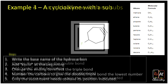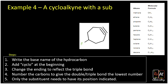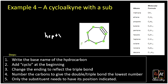Let's go to example four. Now we have a cycloalkyne with a substituent. We want to write the base name of the hydrocarbon by counting the carbons: one, two, three, four, five, six, seven — so that's a heptane. We want to change the ending — because it's a triple bond, we get heptyne. And because it's a cyclic compound, we put 'cyclo' up front, giving us cycloheptyne.